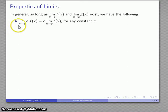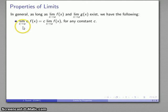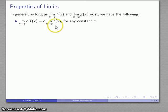First off, the limit as x approaches a of c times f of x is c times the limit, for any constant c. In other words, the limit of a function multiplied by a constant is the constant multiplied by the limit of the function.